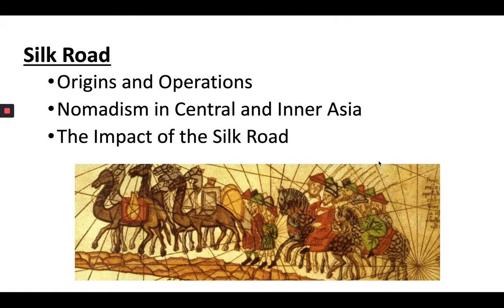The Silk Road is not a single road. It is a series of trade routes that go over land connecting East Asia to Central Asia and Europe. These are caravan trade routes — they go across China, across Kazakhstan, and they connect Persia with this trade network. These trade routes have been around forever. During this time period, we're going to see them really expand and strengthen.